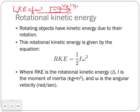We're going to rename it slightly — linear kinetic energy — because it deals with motion in a direction. We also have rotating objects. Rotating objects have kinetic energy due to their rotation. The faster they rotate, the higher the rotational kinetic energy. If we look at the equation, rotational kinetic energy equals one-half I omega squared.